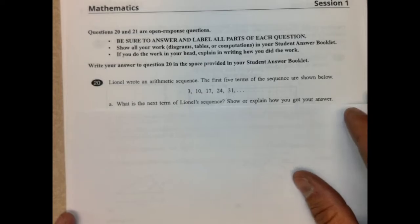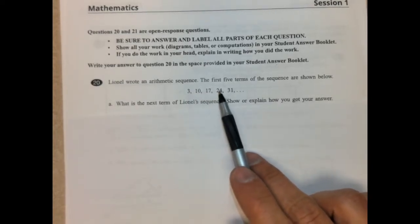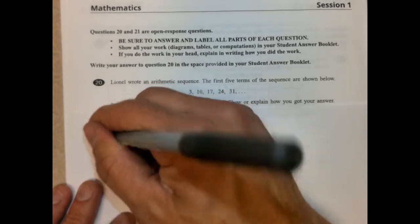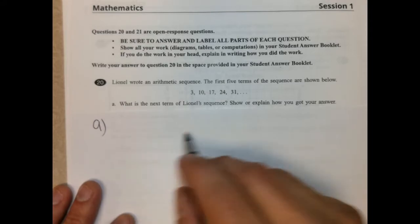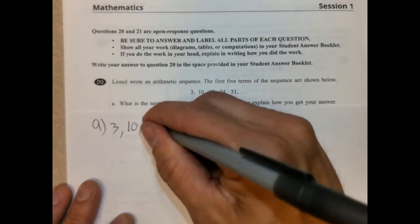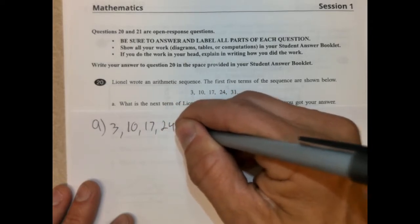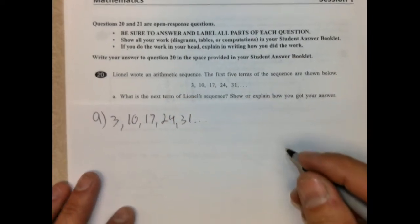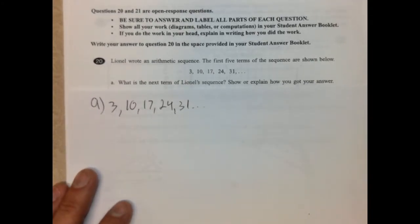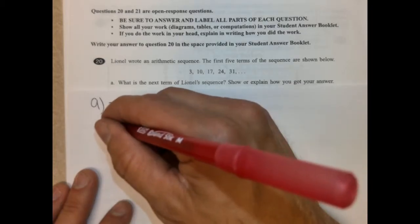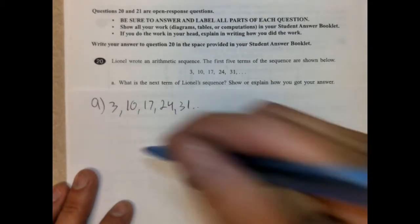Lionel wrote an arithmetic sequence. The first 5 terms of the sequence are shown below: 3, 10, 17, 24, 31. What is the next term in Lionel's sequence? So part A, I'm going to go ahead and write the terms here. So we have 3, 10, 17, 24, 31. Okay. So what's the common difference here? We just take one term, subtract the previous term. So 10 minus 3 is 7. So the common difference is going to be 7 here.